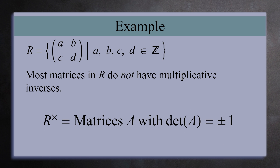In fact, this ring has an infinite group of units — the set of all matrices with determinant 1 or negative 1. We won't prove this here, but it's a very rewarding challenge to try to convince yourself this is true.